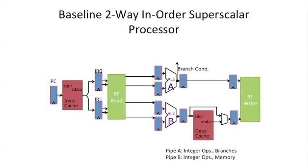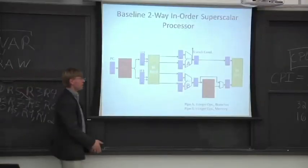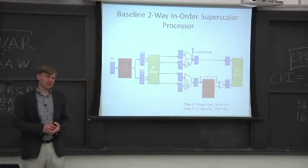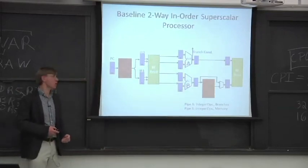Let's look at a baseline two-wide in-order superscalar. That's a mouthful to say. So different than the pipelines we've seen before, we have two ALUs. It's a big difference. We can execute two integer ops at the same time in this pipe.